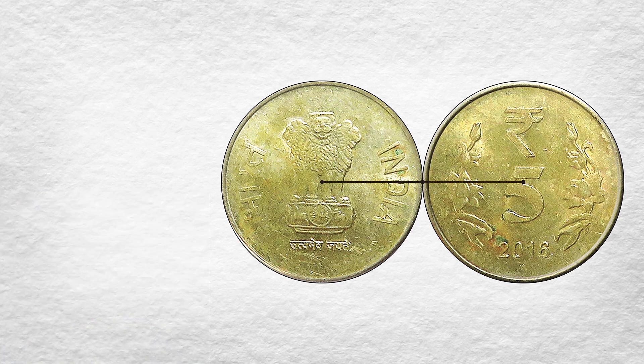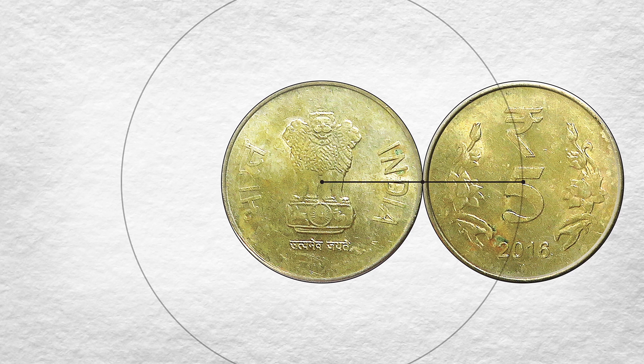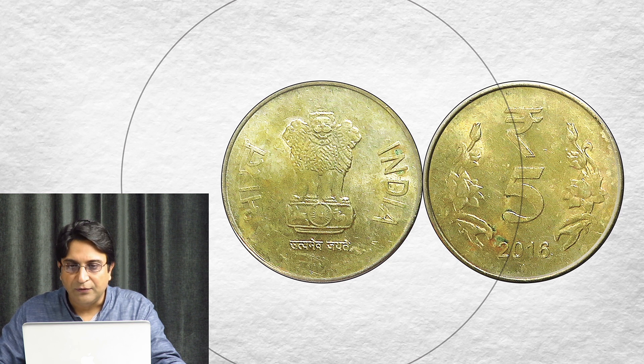Both the 5 rupee coins are identical, therefore their radii are going to be equal. As the outer coin goes around the inner coin, its center is going to trace a concentric circle around the center of the inner coin.